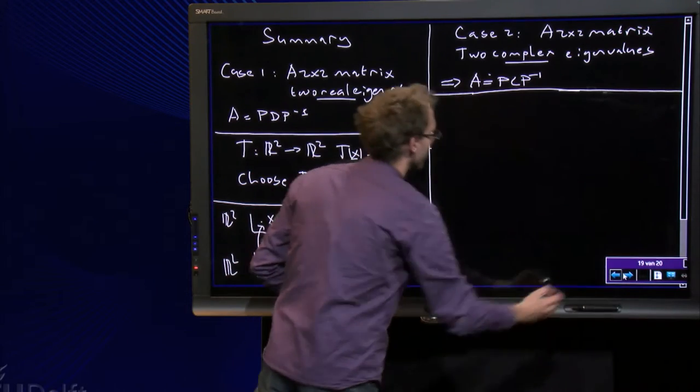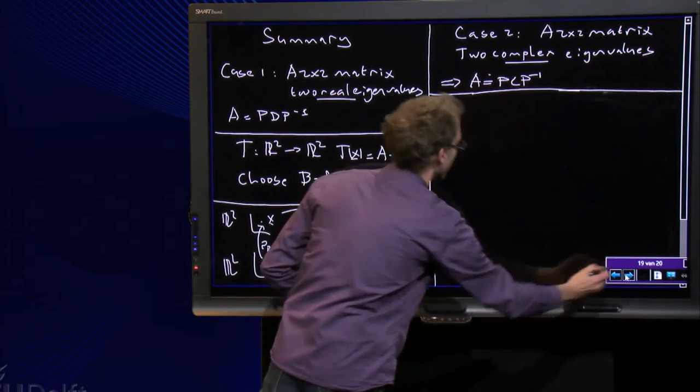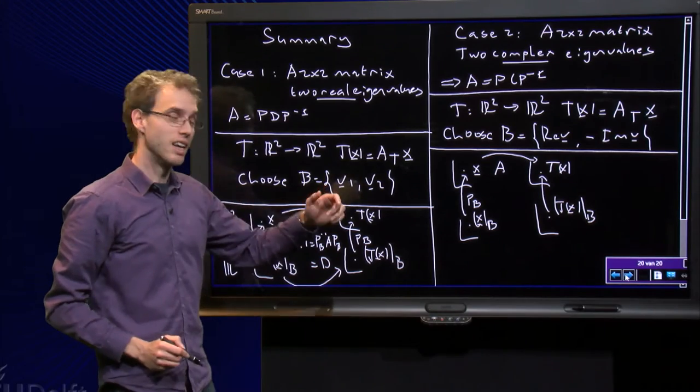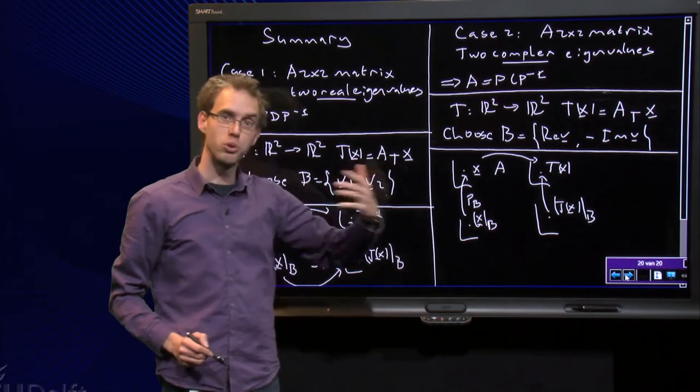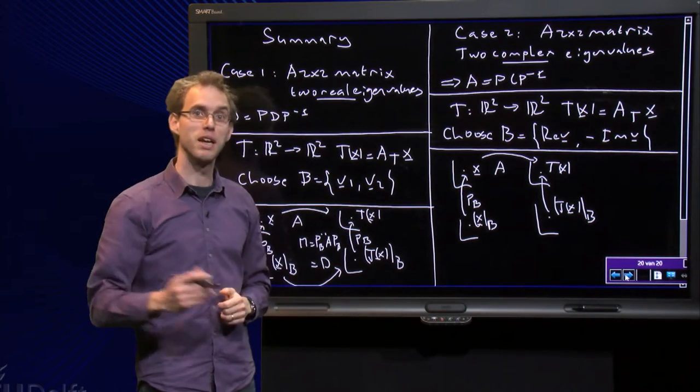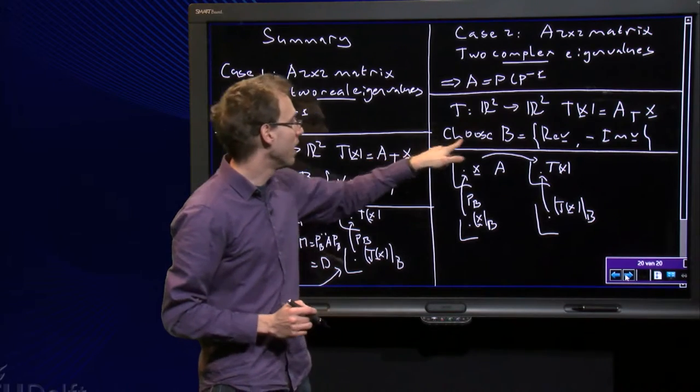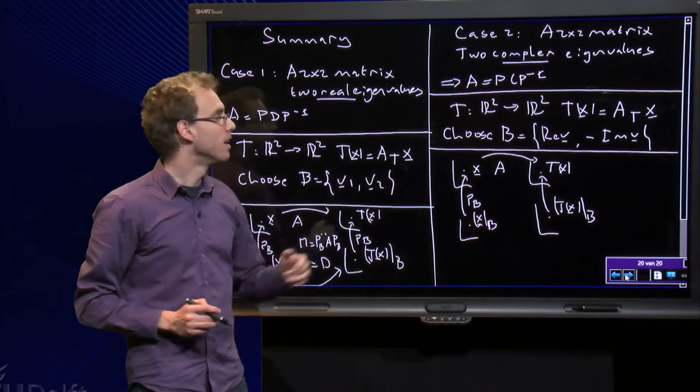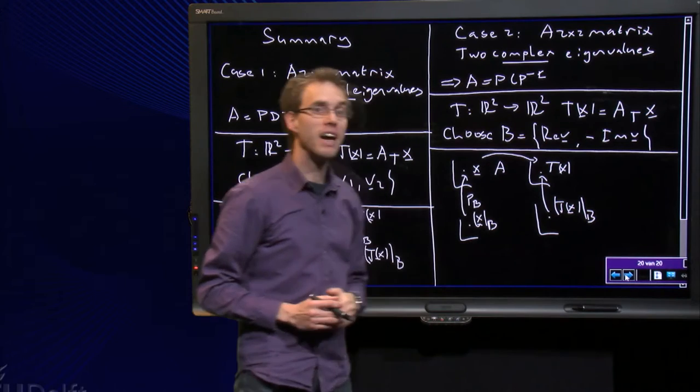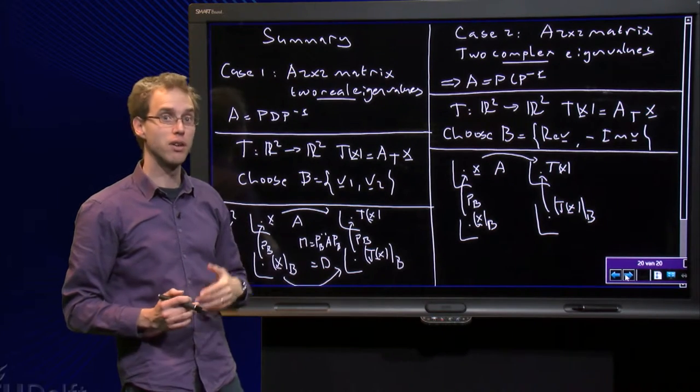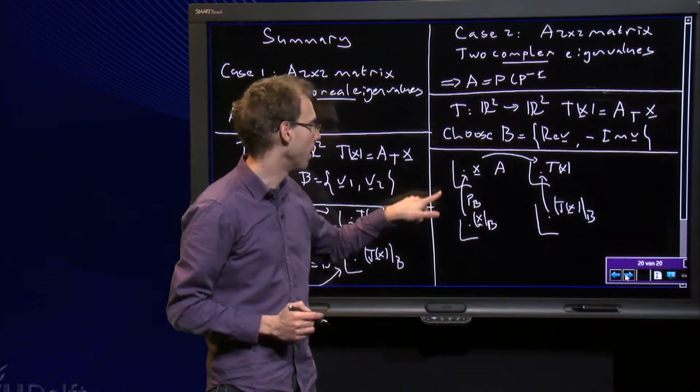So what can we do? We have again the same transformation from R2 to R2, represented by matrix A, but now we choose as basis B the real part of V minus the imaginary part of V. So what happens then if we make the same mapping over here?